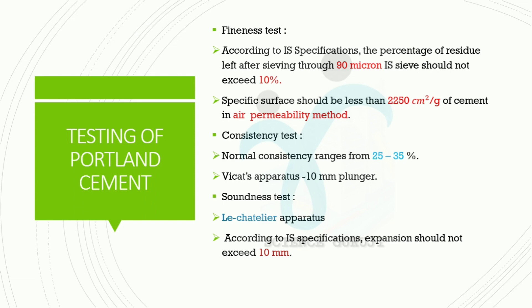First, the fineness test. By step one, we determine the air permeability method. Sieve test: 90 micron ISC will retain a percentage of 10%, and a quantified center is needed. This method gives a specific surface of 2090 cm² per gram.